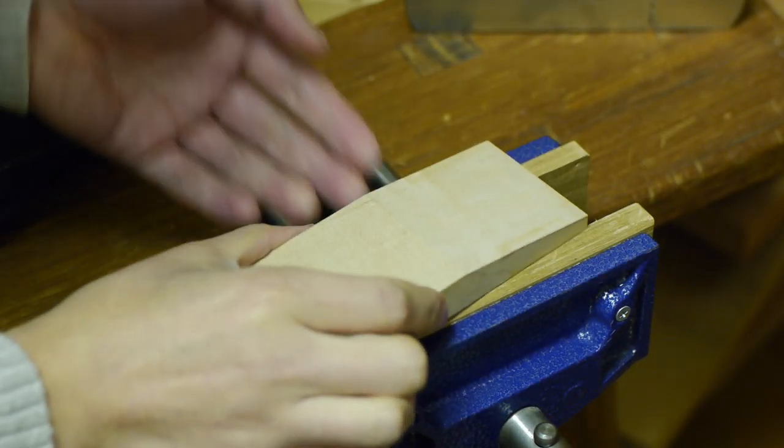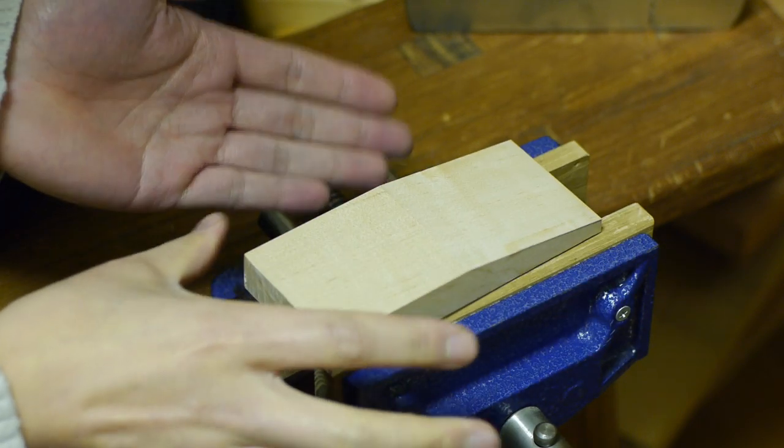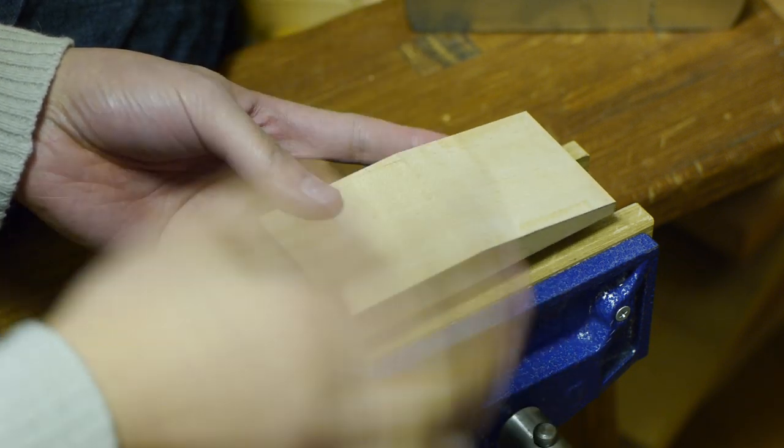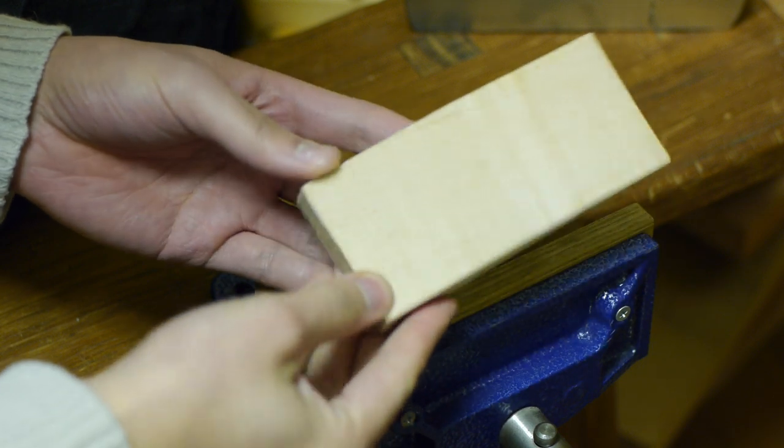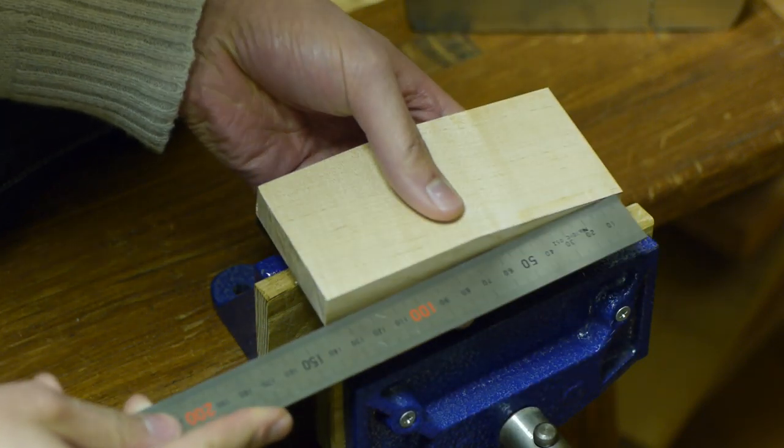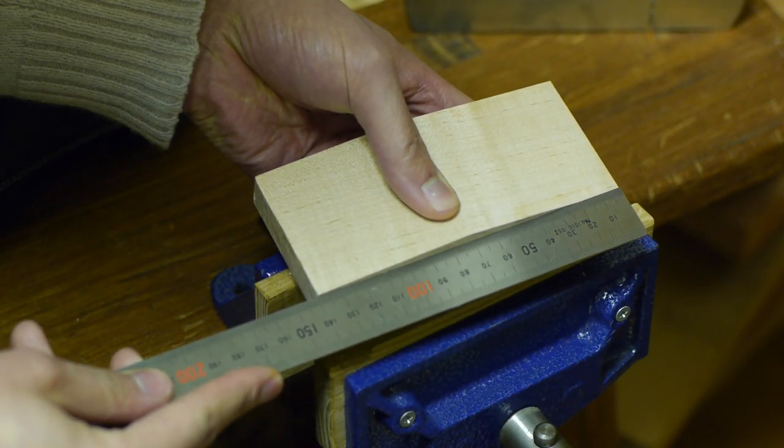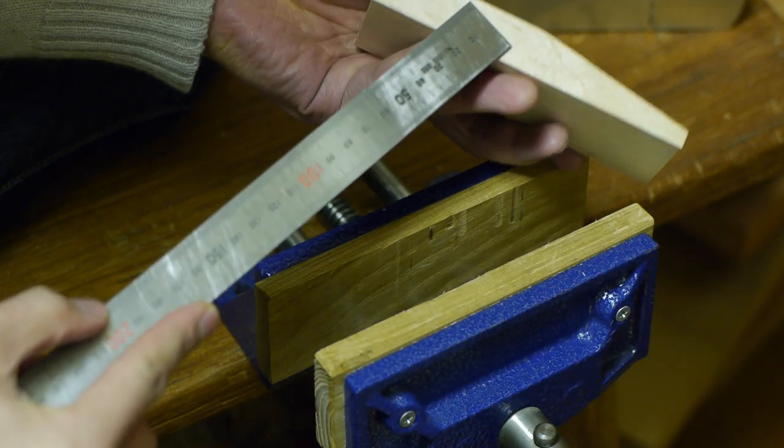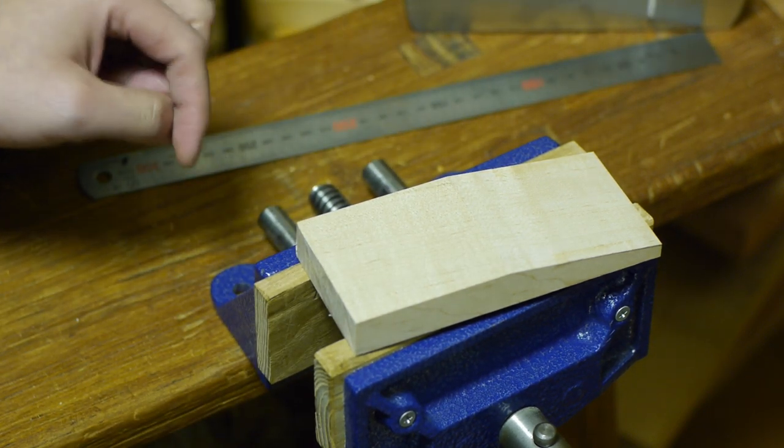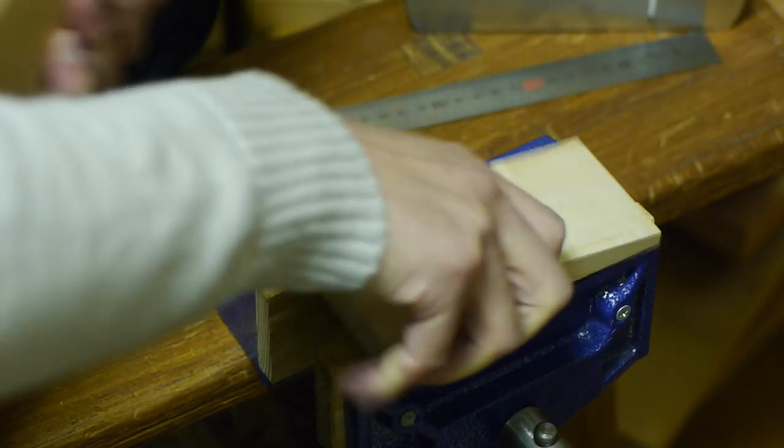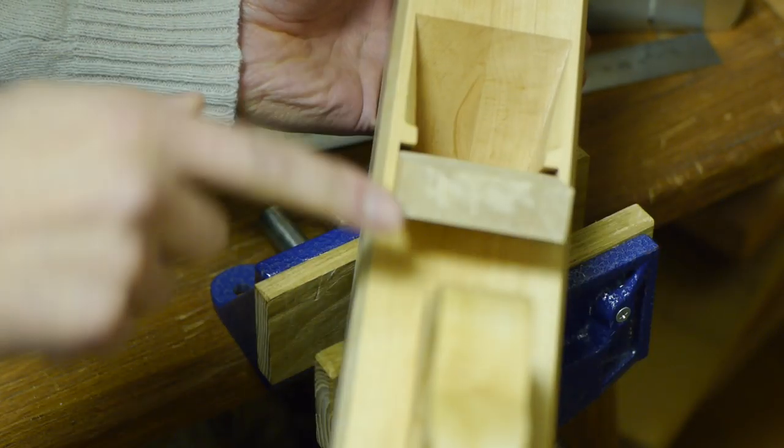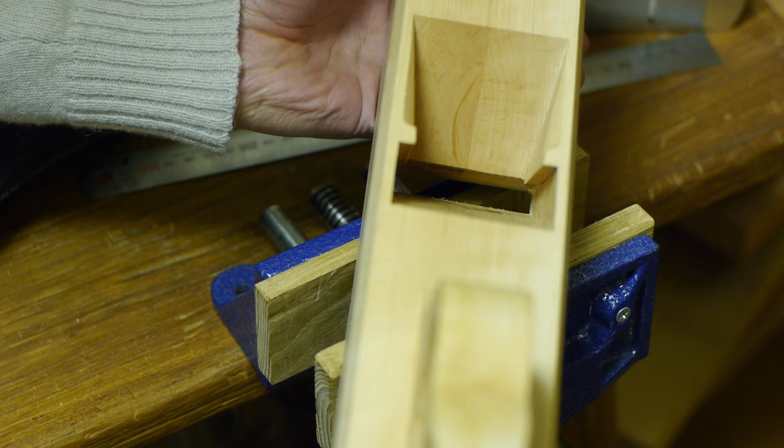Now it's time to make the wedge. And you can see here I've got a piece of, well this is maple. This is actually a kind of reject I started on from my previous planes. And I decided I could use this. But you need a piece of stock which is, this is about fourteen centimeters. And thickness is about three quarters of an inch, nineteen millimeters. And the width is the width of the opening in your plane. So you want it to fit kind of in there nicely with not much side play. So it's nice and snug.